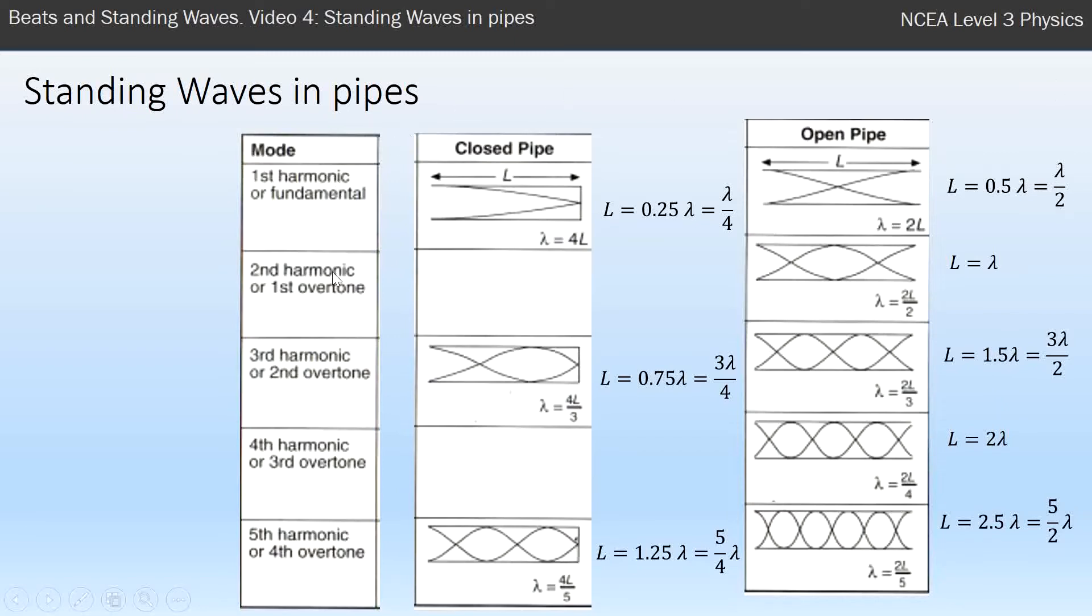This is why there's the first, second, third, fourth, fifth, because the fifth harmonic down here is five times bigger than the first one.